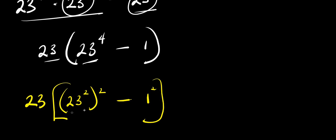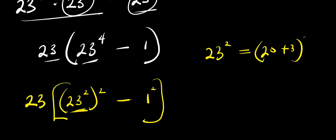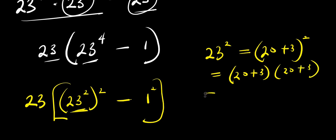Now before then, let's find out what is the value of 23 to the power 2. We have 23 squared, which is just like writing 20 plus 3, all to the power 2. So I can expand this as 20 plus 3 times 20 plus 3, and this will give me 20 times 20, that is 400, plus 20 times 3, that is 60, plus 3 times 20, that is 60, plus 3 times 3, that is 9.